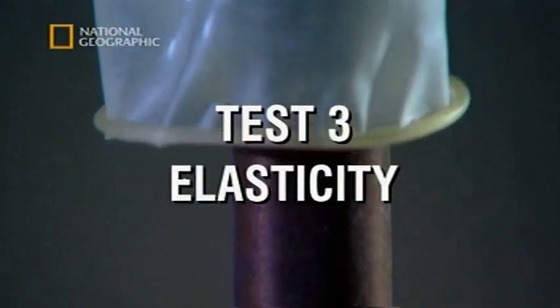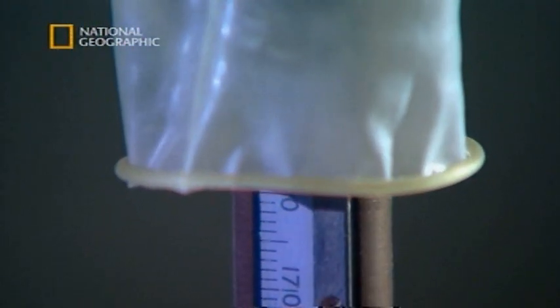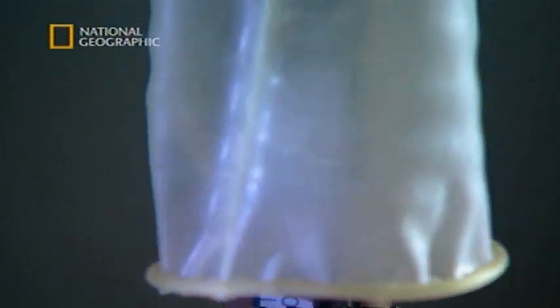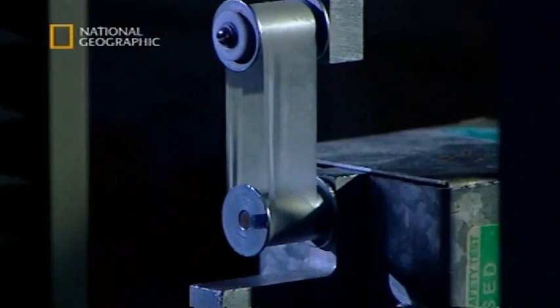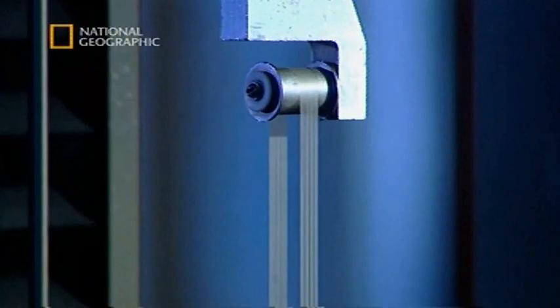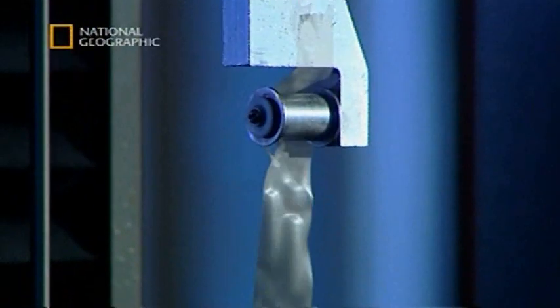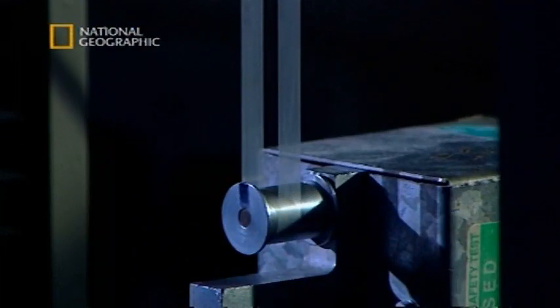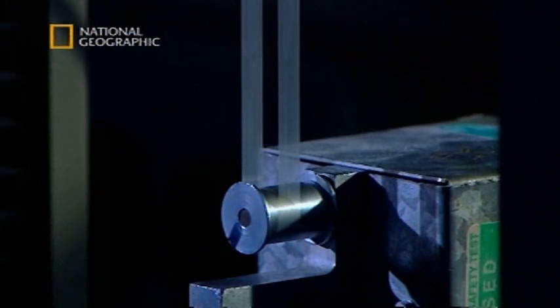Moving on to a test for elasticity. Condoms must be at least 16 centimeters long to pass the BSI test, and some have to prove they can stretch as well. A bit of rubber is cut from the condom and pulled to its limits. This one can take well over 100 newtons of force, which means it's passed.